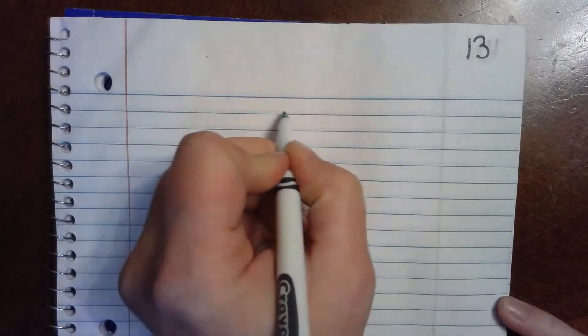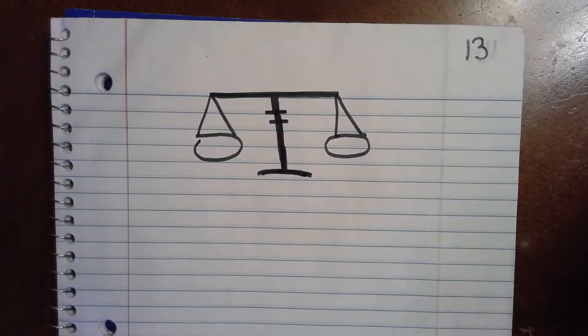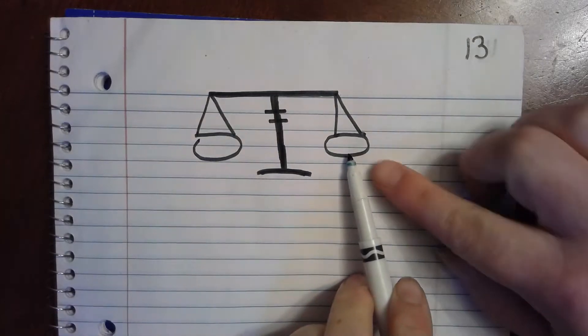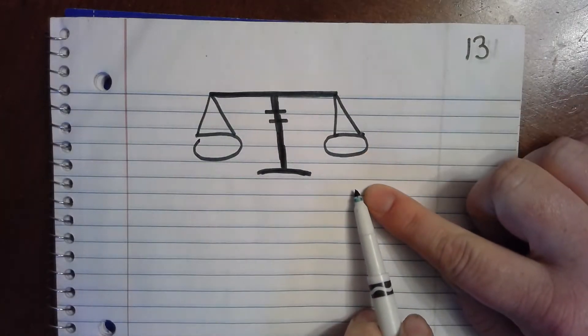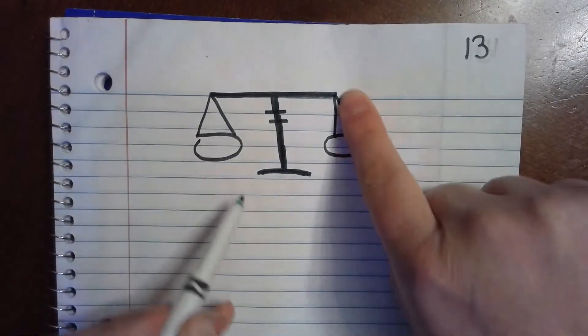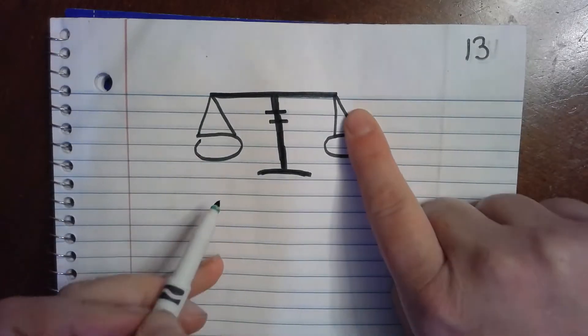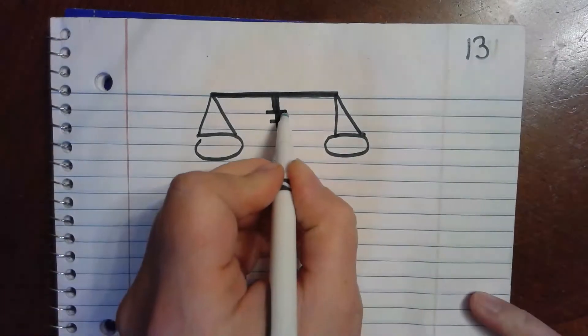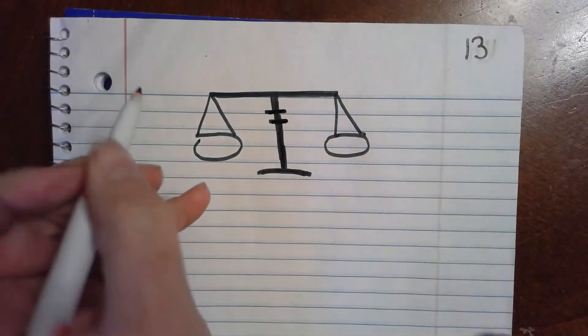One thing you have to remember though is that everything needs to stay balanced. When we have an equation, it's like a scale. If you've ever been to a store and tried to weigh something — if I put something on one side it weighs it down. So if I do something to this side, I have to do it to this side too. Equations are the same thing: they must stay balanced.